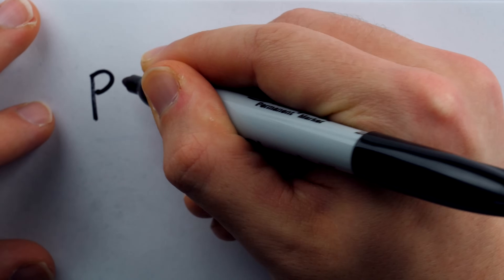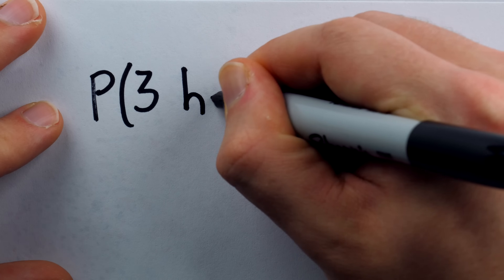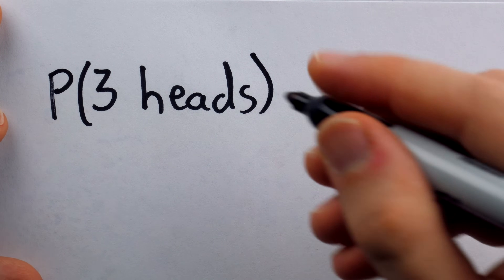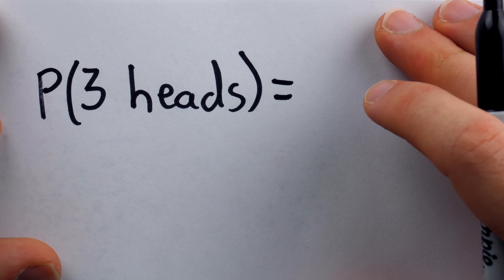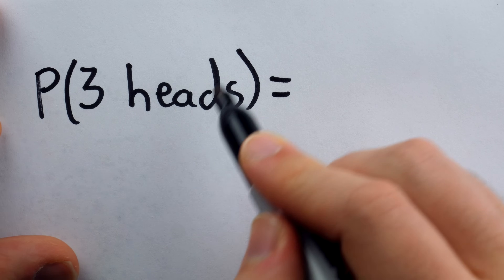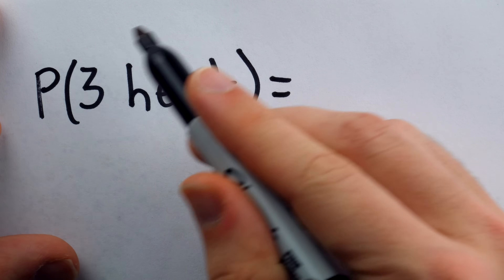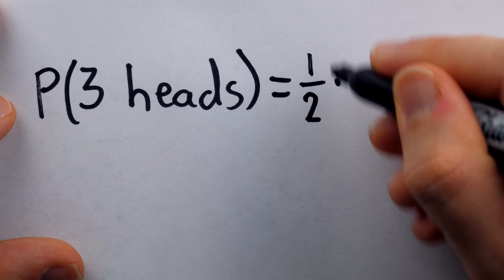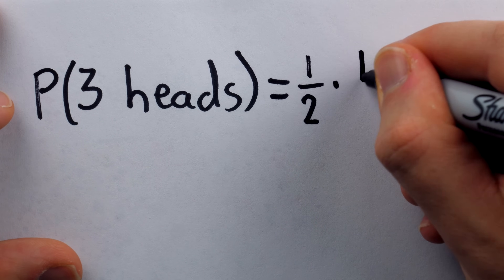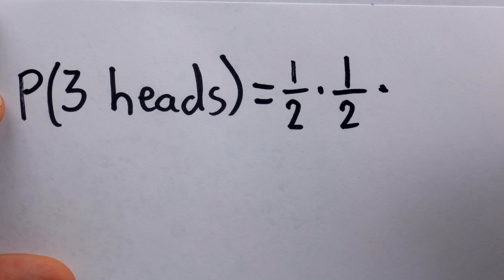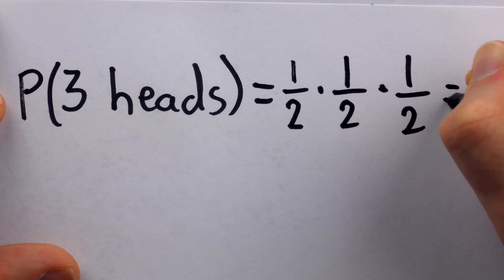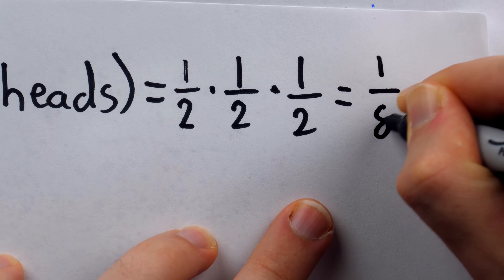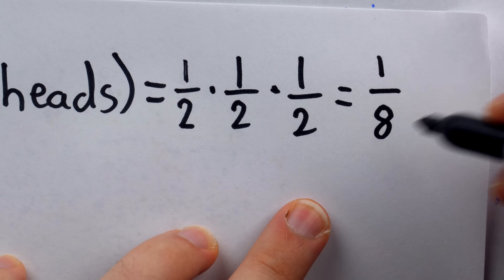For example, if I'm flipping three coins and I want to know what's the probability that we get three heads — flipping heads has a probability of one-half, and the coins are all independent, so one flip doesn't affect the next. To find the joint probability of three heads, that's just the product of the individual probabilities: one-half times one-half times one-half, giving us a joint probability of one-eighth.